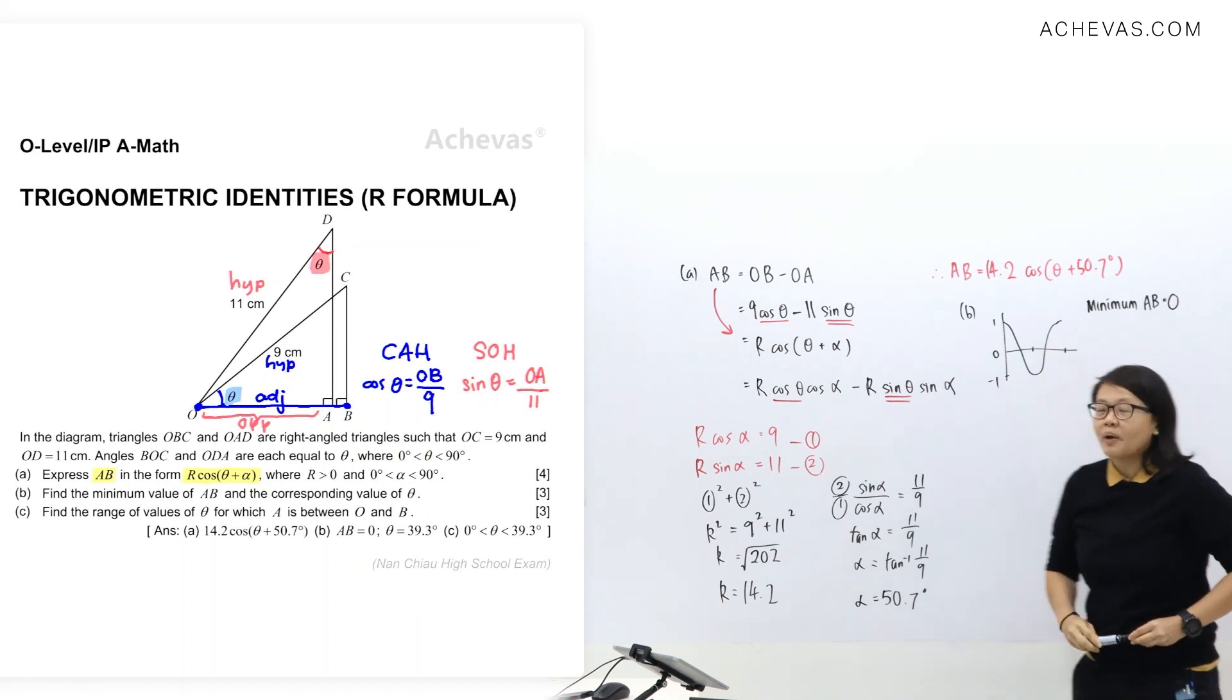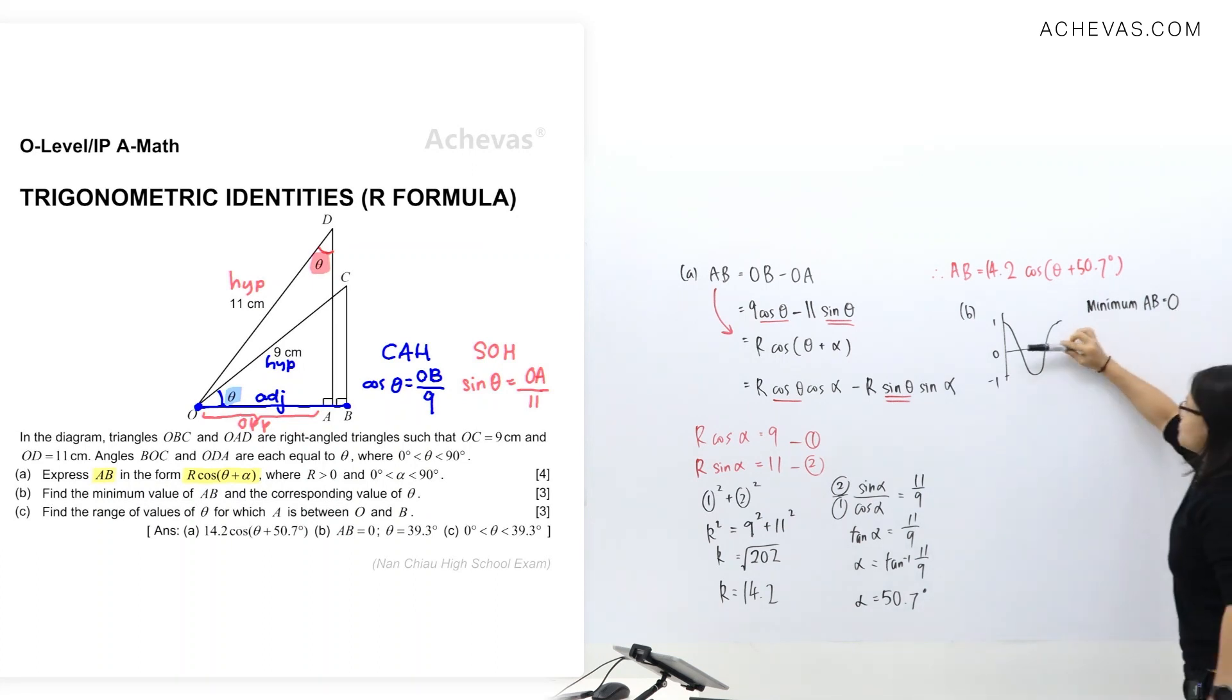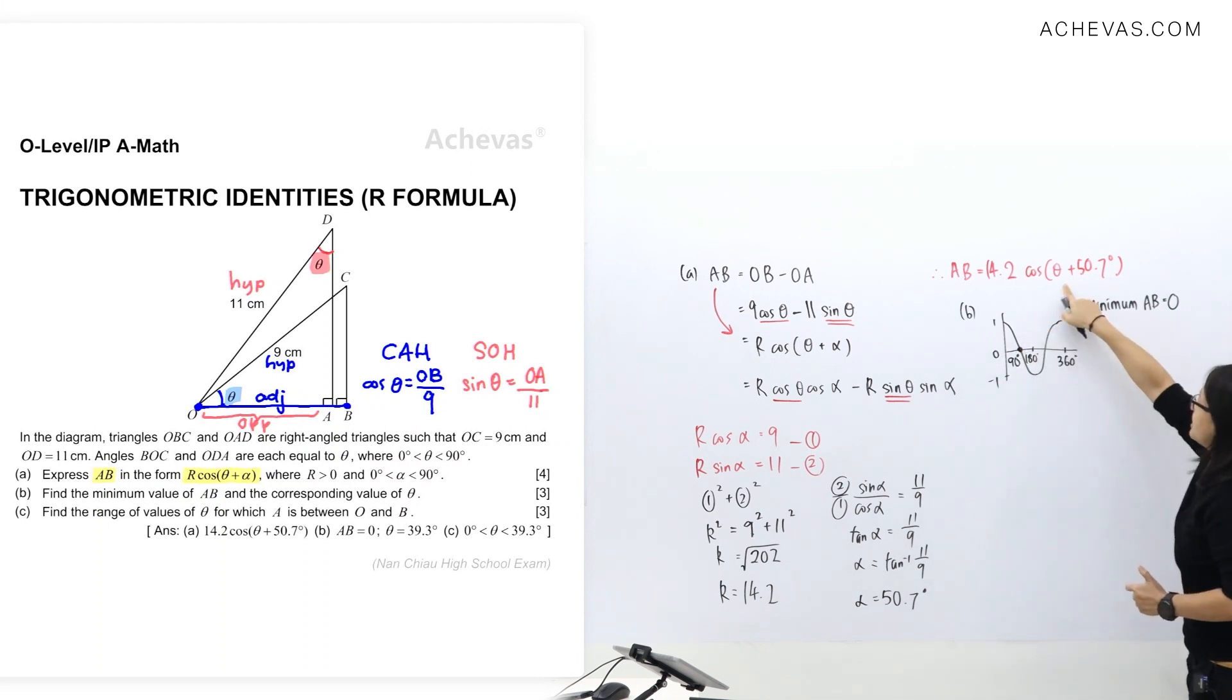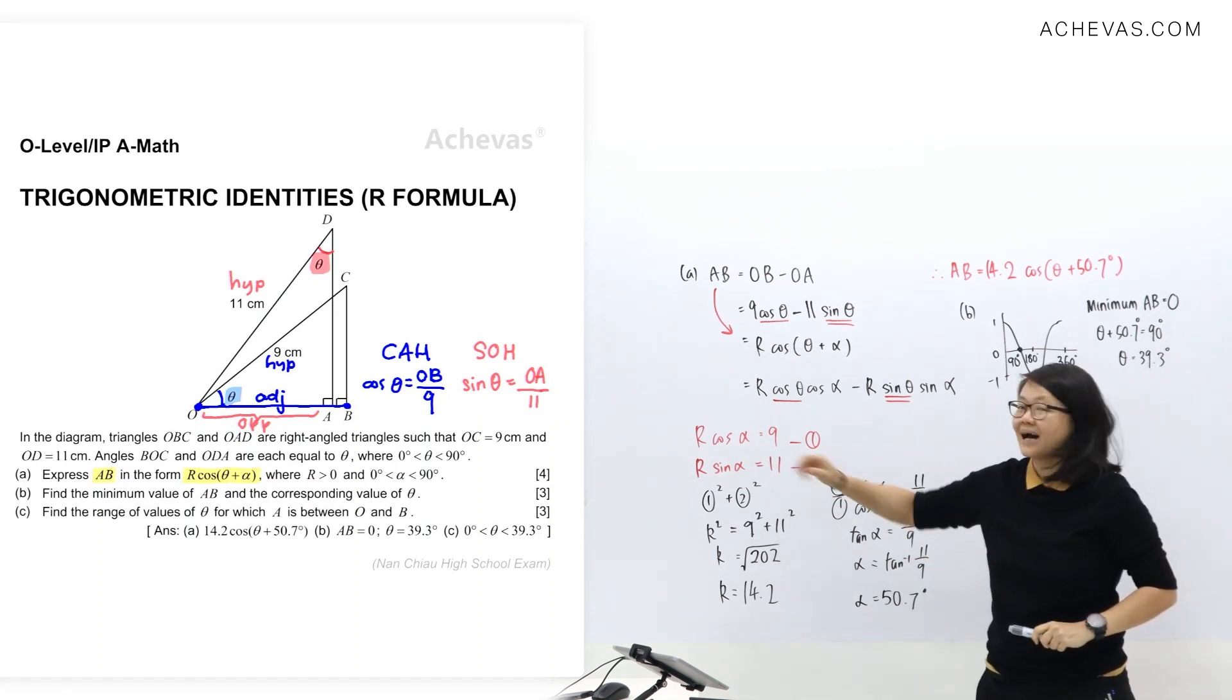Now for this one here, when we consider AB equals to 0, meaning I'm checking at 0 position here. So this graph here ends at 360 degrees. So the middle here is 180. And to get 0 at this point here, it's going to be 90 degrees. Let me equate this one. Theta plus 50.7 degrees equals to 90 degrees. So theta value must be 39.3 degrees. Now you'll notice that theta is between 0 to 90. So we are checking this point. Our answer here is between 0 to 90. So this answer will be our answer for part B.